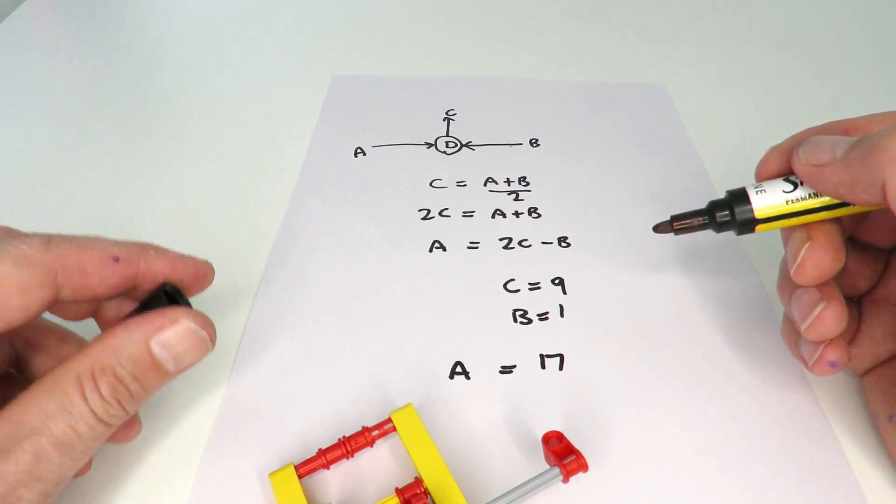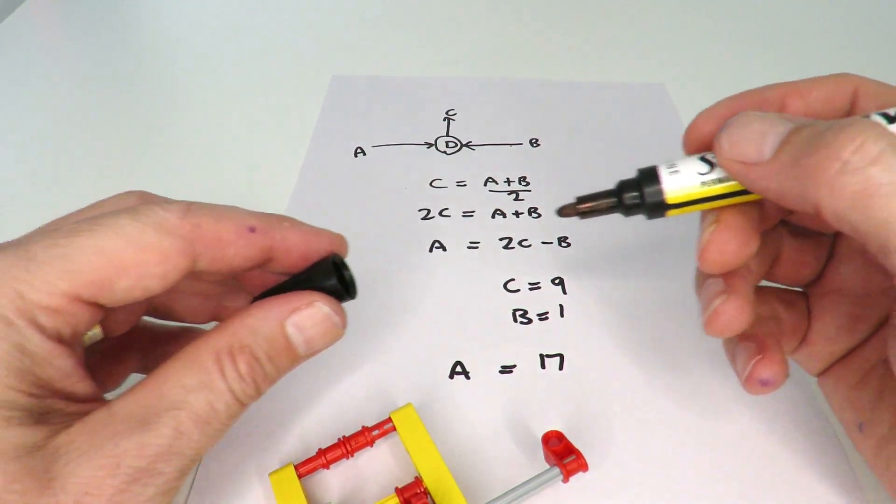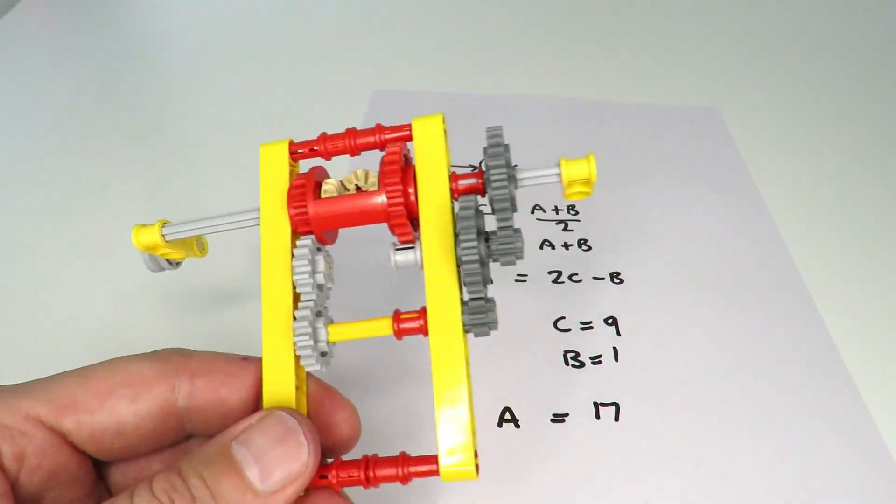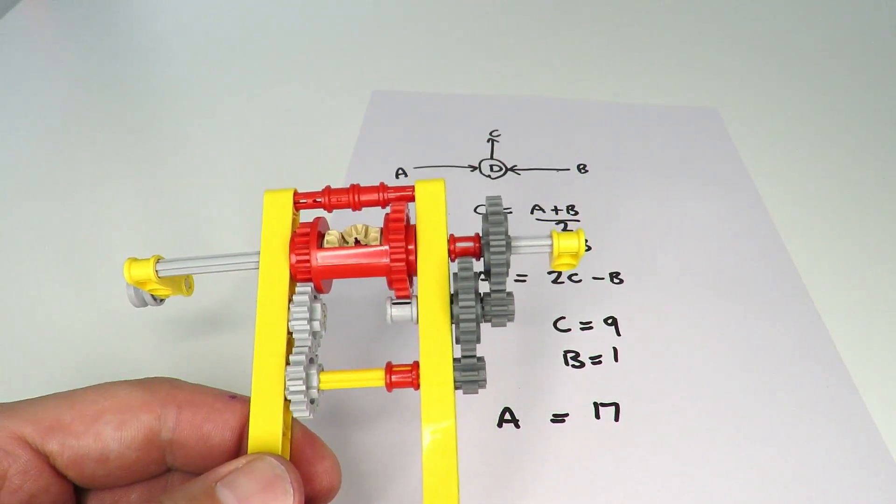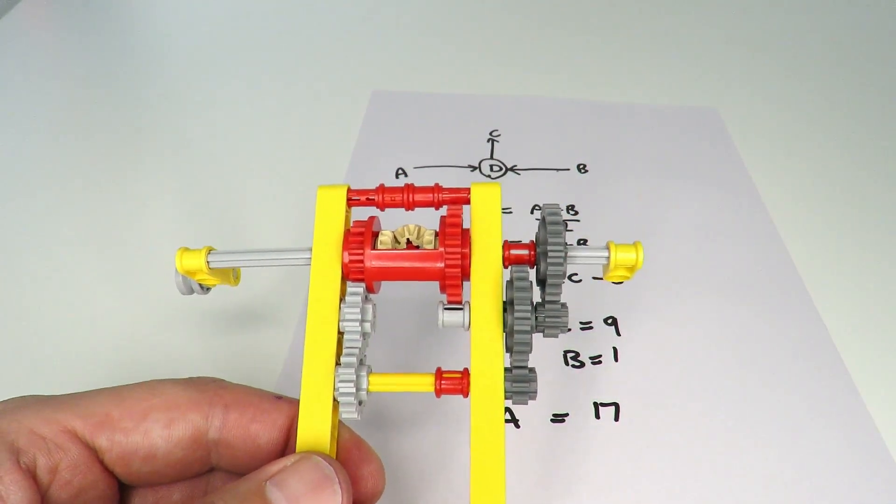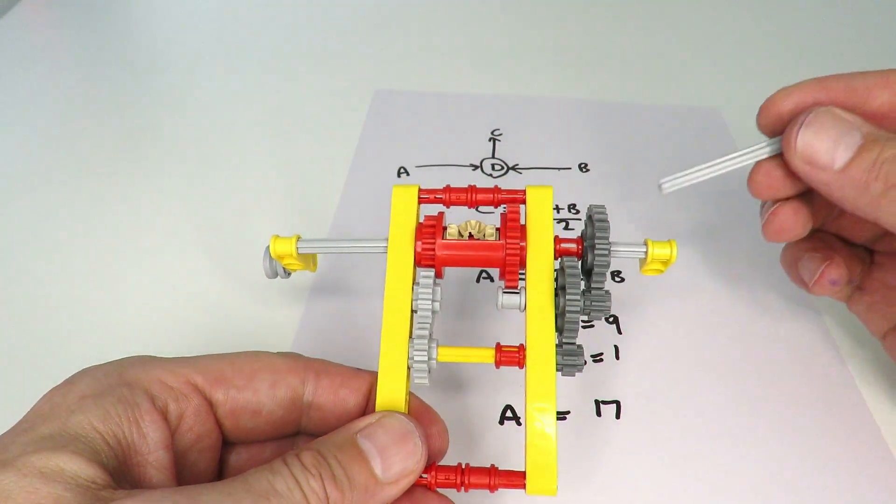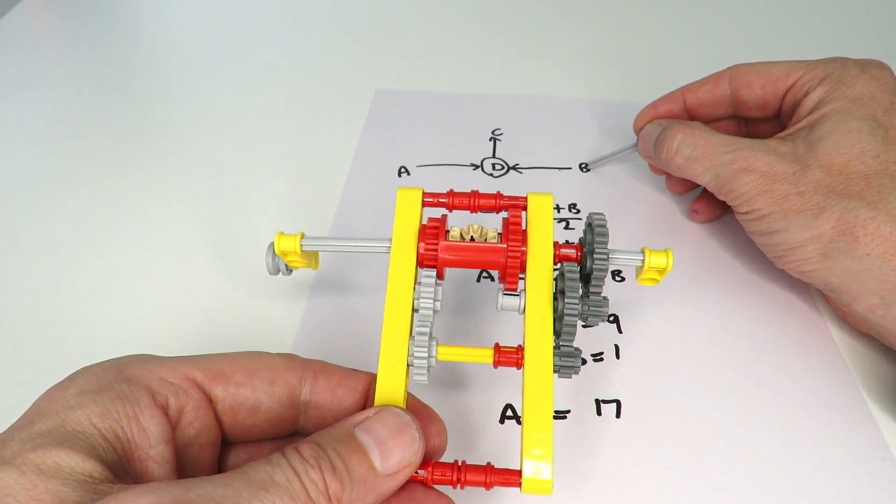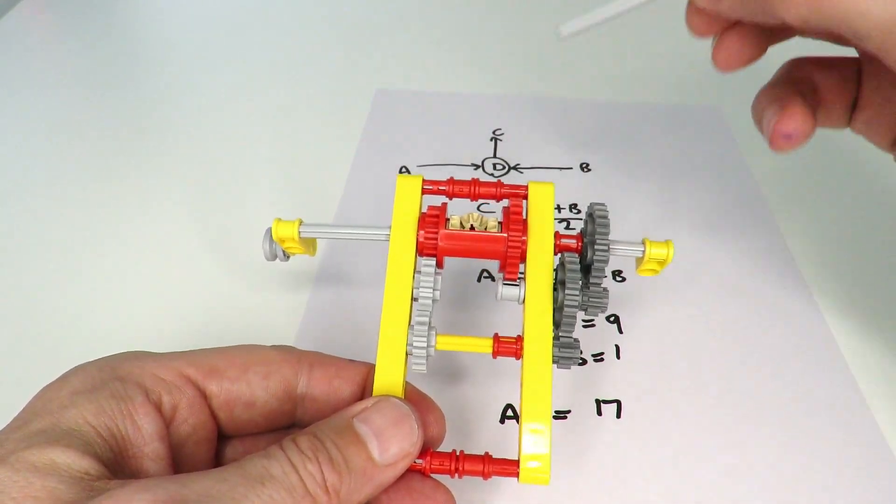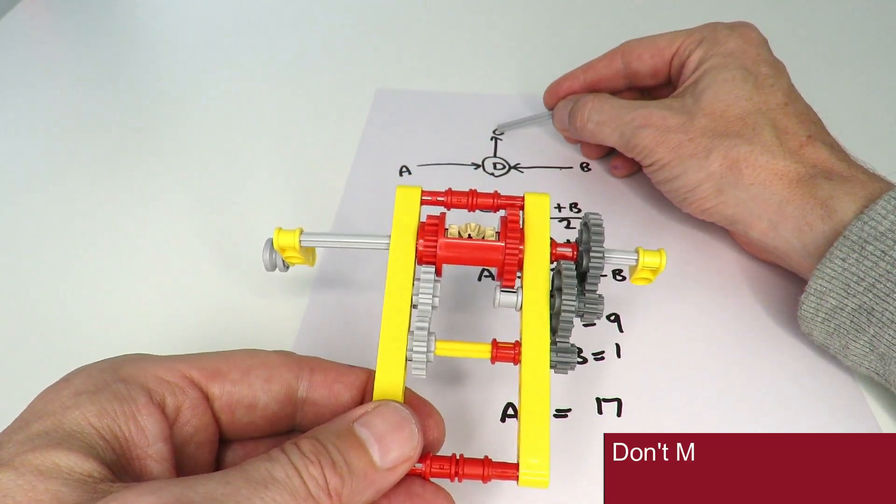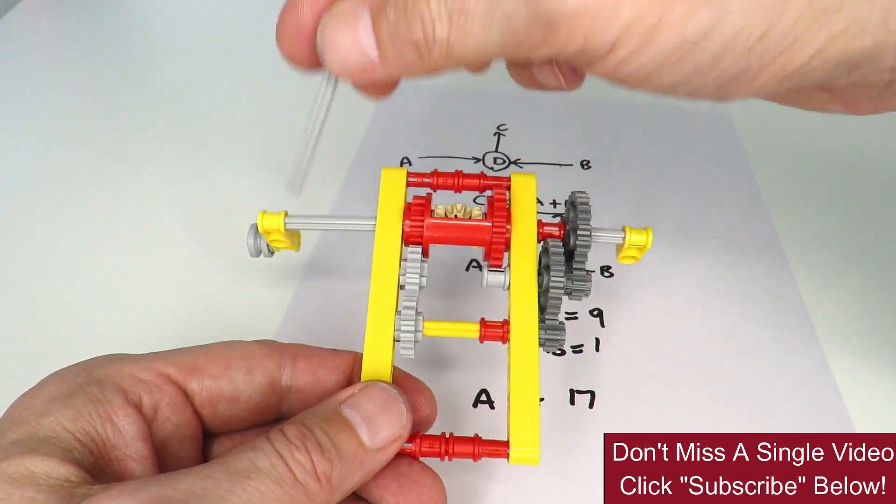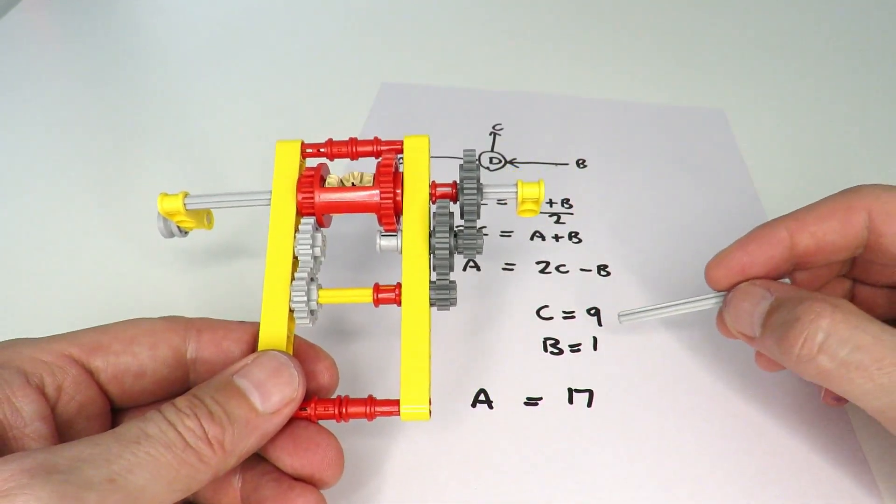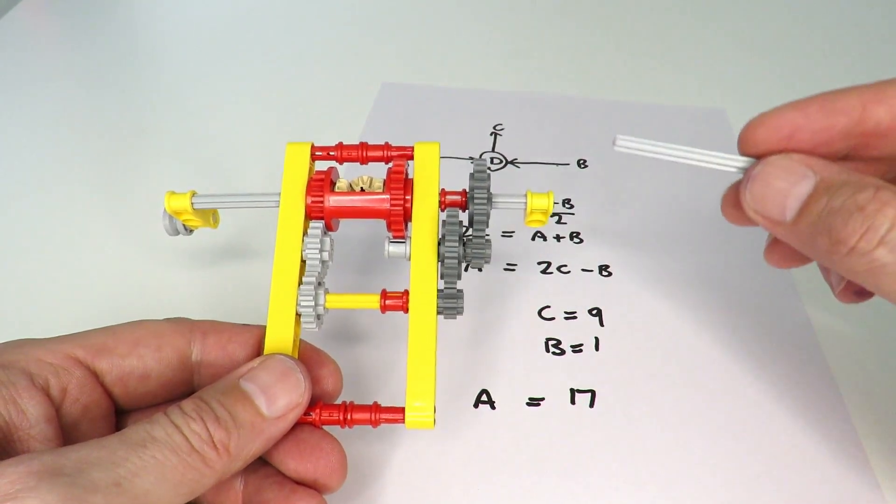I'll just show an example of an actual construction of that mechanism. Right, so I've created an implementation of the 17 to 1 gear ratio using the differential mechanism. On the right here, we've got this axle here, which represents axle B on the diagram. We've got the central barrel, which represents axle C on the diagram, and A on the left.